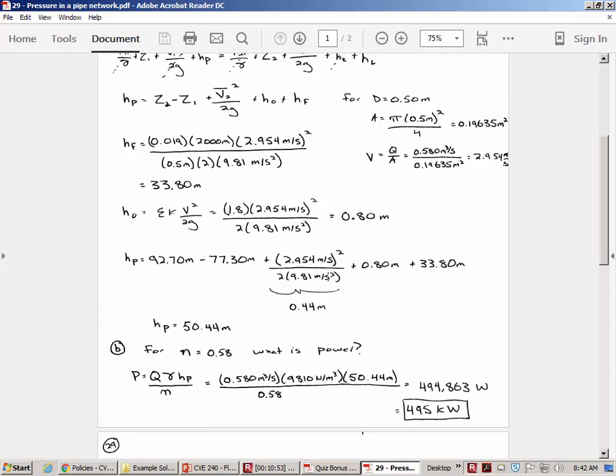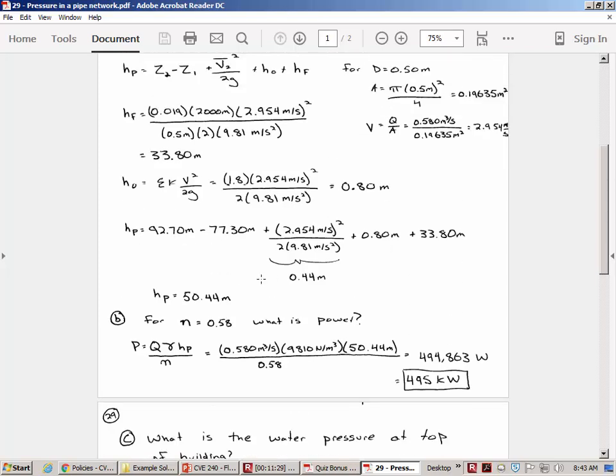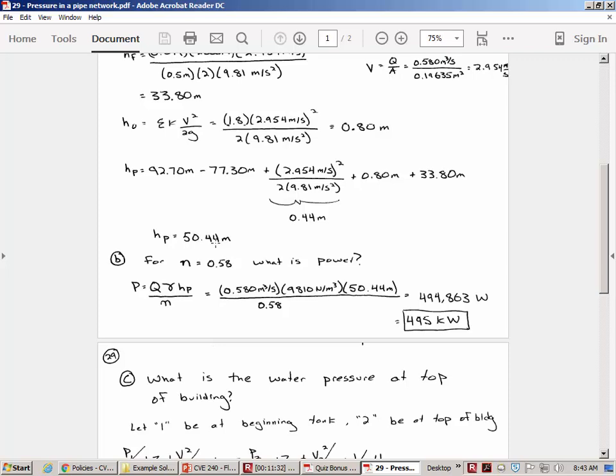So if we substitute everything together, you can see that here's the elevation difference between the two points. The pump definitely has to add at least that much head, the head required to physically lift the water. But then it also has to add enough head to overcome the losses, and enough head for the velocity head at 2. Velocity heads are relatively small. You can see it's only 0.44 meters of head due to the velocity. The majority of the energy that has to be added by the pump is to lift the water, the elevation difference, and the friction losses. So all together, we have the 50.4 meters of pump head, and then you can see for the efficiency factor, that works out to about 495 kilowatts.